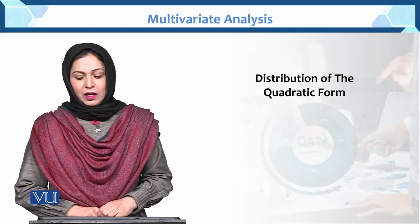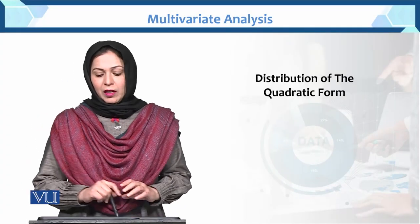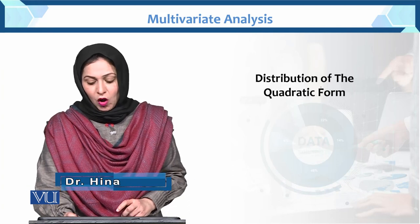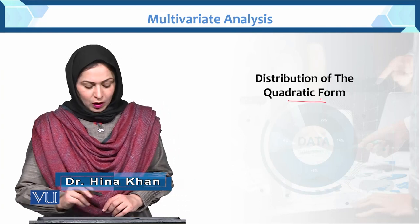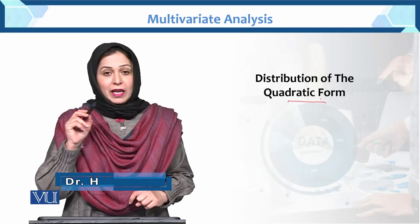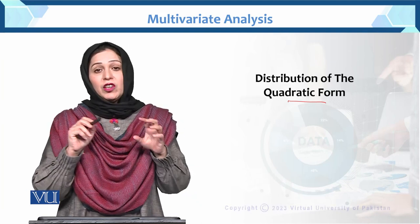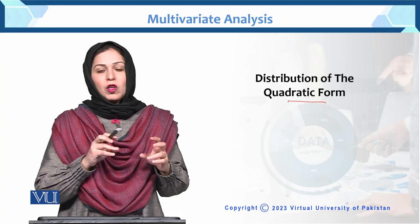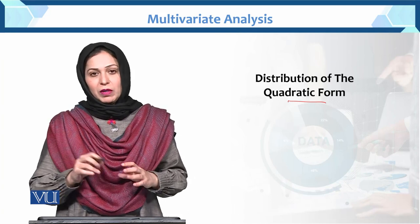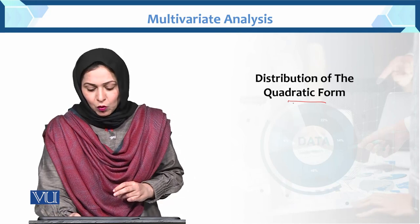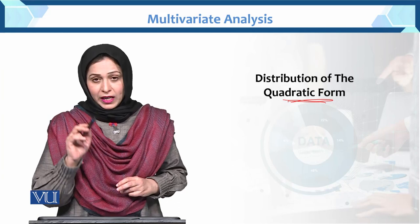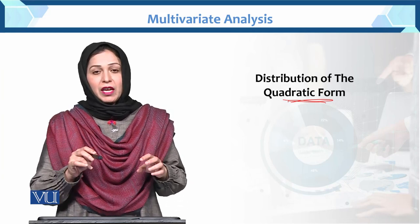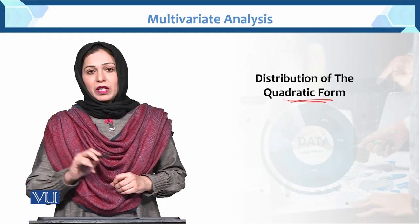Dear student, here we will learn the distribution of the quadratic form. When we do a linear transformation, the variable follows the normal distribution. When we have a quadratic form, the transformation follows the chi-square distribution.